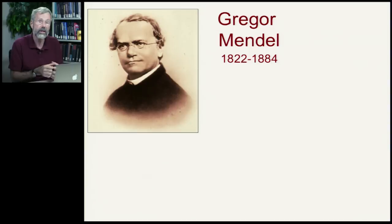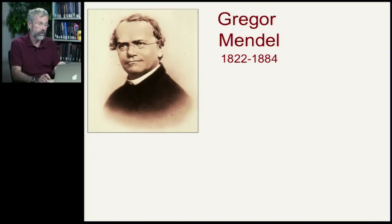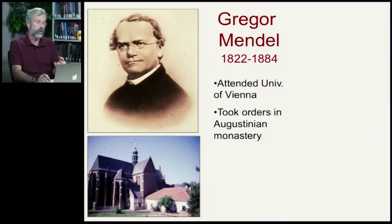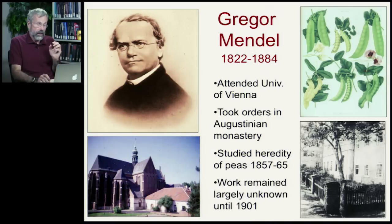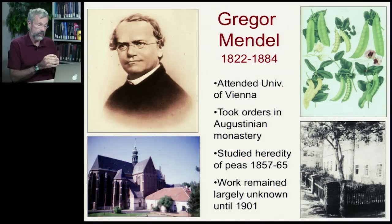We understand now how genetics works and can continuously generate variation through time, through the work of Gregor Mendel, who lived from 1822 to 1884. He attended the University of Vienna and took orders in an Augustinian monastery, where as a monk he devoted much of his life to studying the heredity of peas — peas like on a plate — doing very careful breeding experiments in the garden of the monastery over an eight-year period.